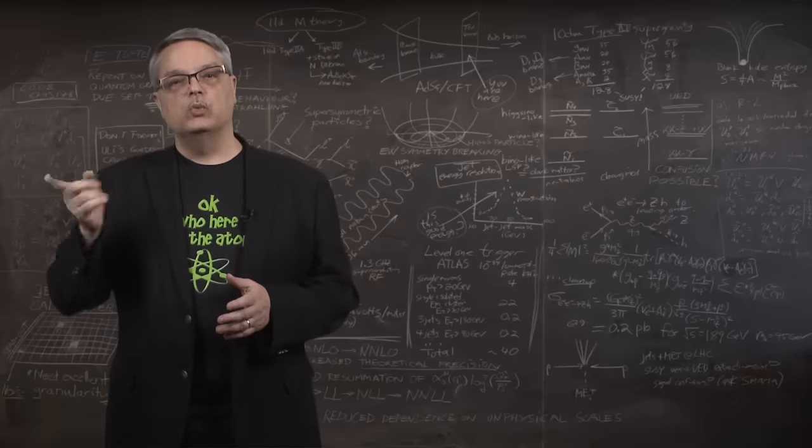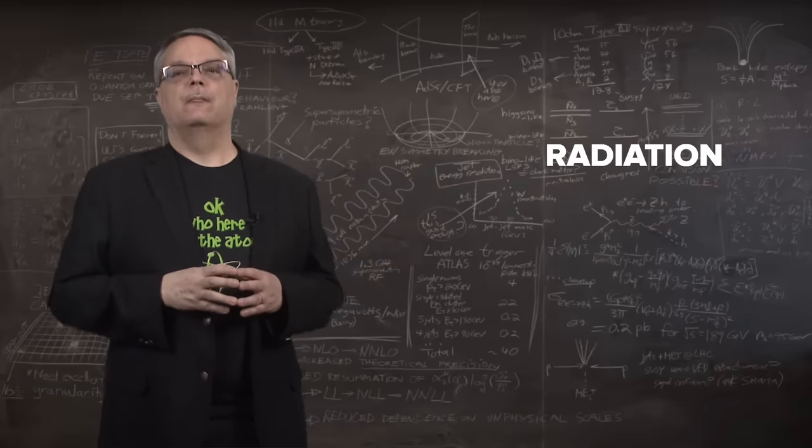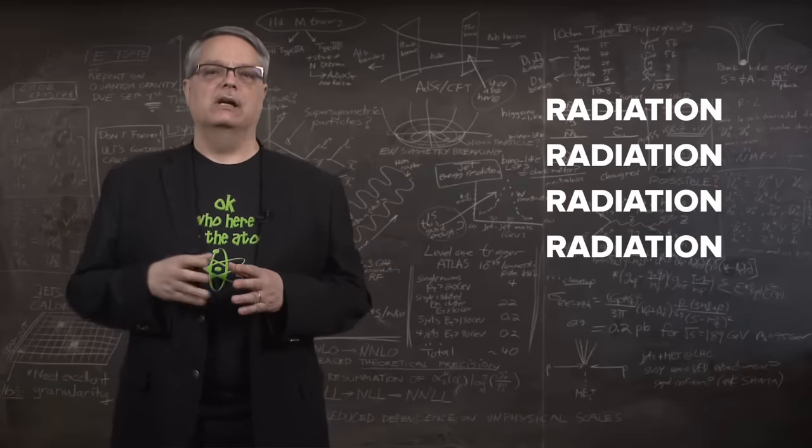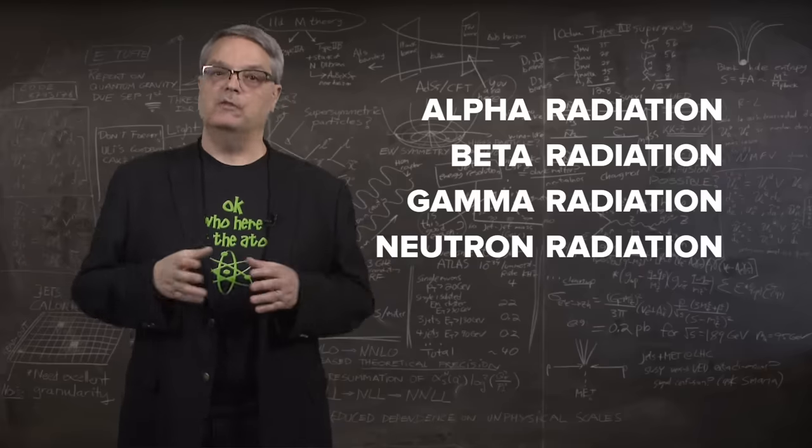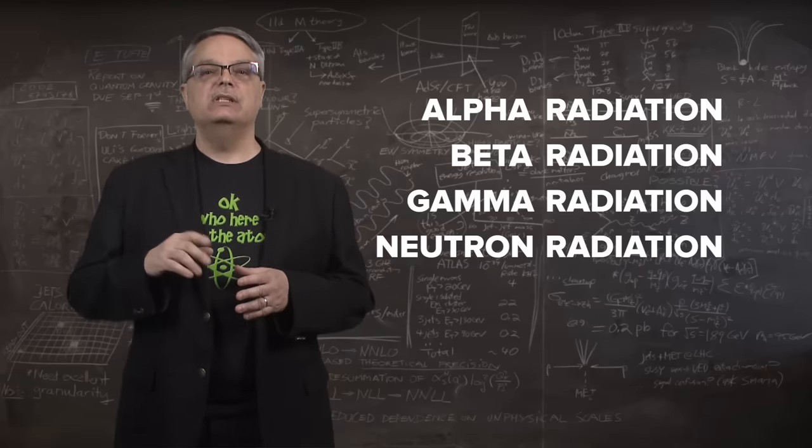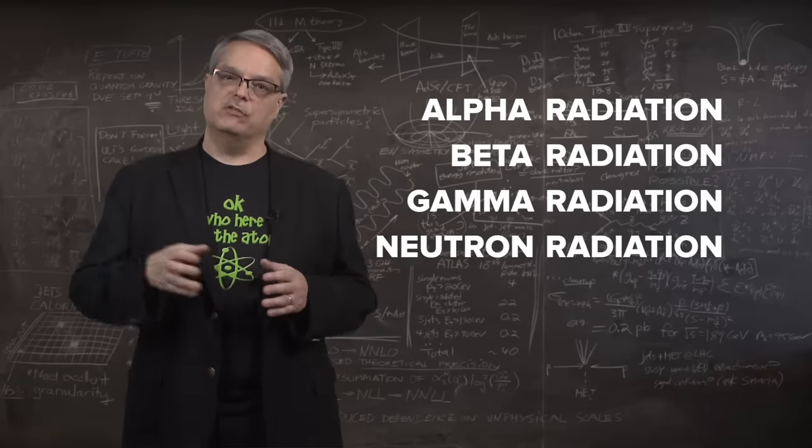And there isn't just one kind of nuclear radiation. There are at least four different kinds. There's alpha radiation, beta radiation, gamma radiation and neutron radiation. Each of these types of radiation have different characteristics.